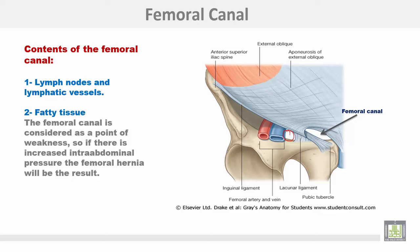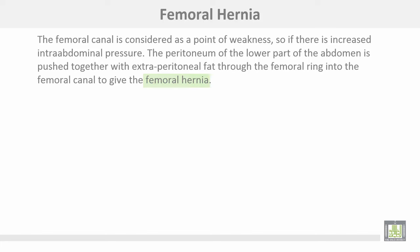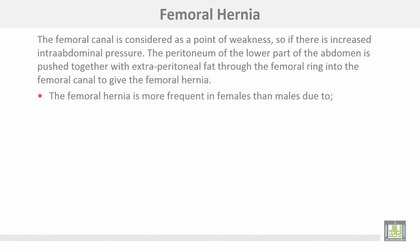The femoral canal is about one and a half centimeters long. It lies in the medial compartment of the femoral sheath to give a space for dilatation of the femoral vein during increased venous return. The femoral canal contains lymph nodes, lymph vessels, and fatty tissue. It is considered a point of weakness, so if there is increased intra-abdominal pressure, femoral hernia will result. The femoral hernia passes through the femoral canal.